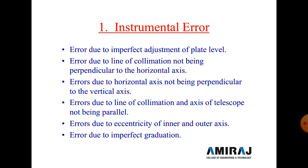Some key points of instrumental error: First is error due to imperfect adjustment of the plate — if the theodolite plates are not perfectly adjusted, a small mistake causes an angular error. Second is error due to the line of collimation not being perpendicular to the horizontal axis, meaning the line of collimation and the horizontal axis are not perpendicular to each other, generating an angular error. Third is error due to the horizontal axis not being perpendicular to the vertical axis.